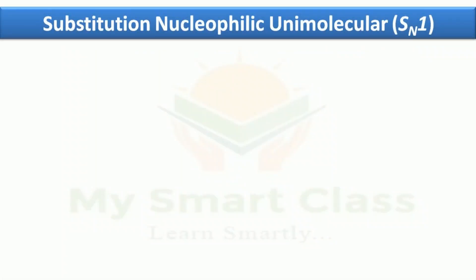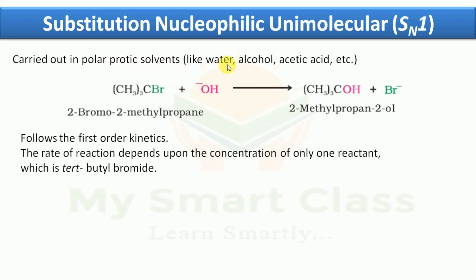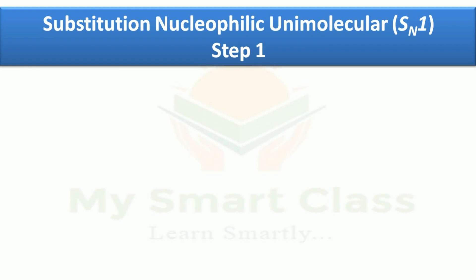Now let's understand the SN1 reaction. SN1 reactions are carried out in protic solvents such as water, alcohol, and acetic acid. The reaction of 2-bromo-2-methylpropane with hydroxide ion gives the product 2-methylpropan-2-ol. This reaction follows first-order kinetics and the rate depends only on the concentration of one reactant: tertiary butyl bromide.